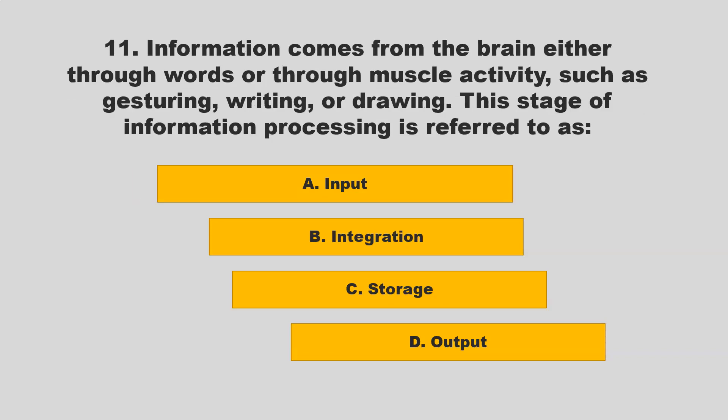Information comes from the brain either through words or through muscle activity such as gesturing, writing, or drawing. This stage of information processing is referred to as: A) input; B) integration; C) storage; D) output. If you chose D — output — you are correct.